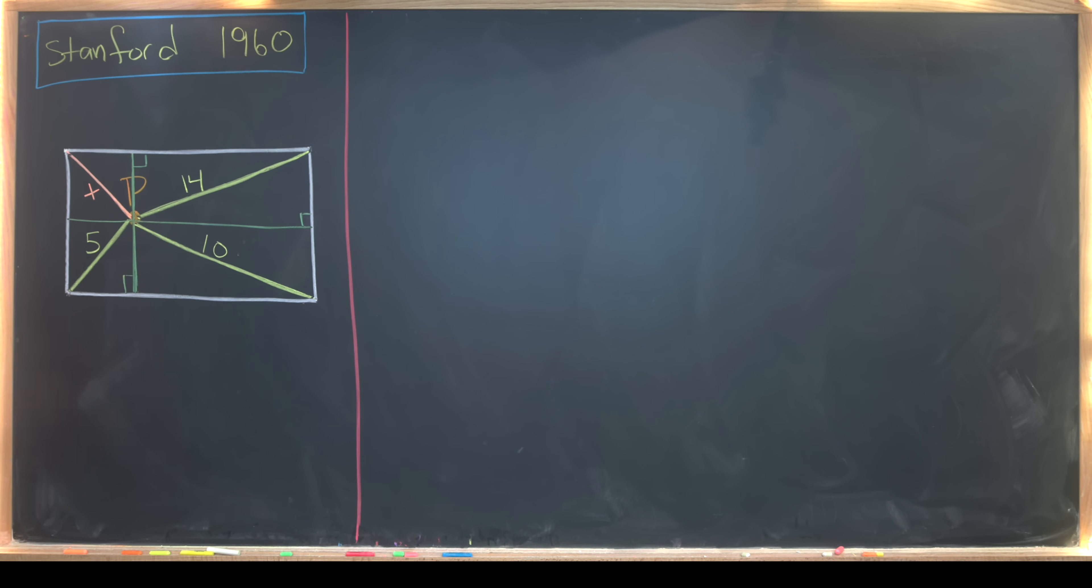Now notice I've got some sub rectangles. I've got this sub rectangle right here which has diagonal length 10, this one which has diagonal length 14, this one which has diagonal length 5, and then this one up here with diagonal length x. Which that's actually going to be really helpful because we don't know the diagonal length of the whole rectangle at all.